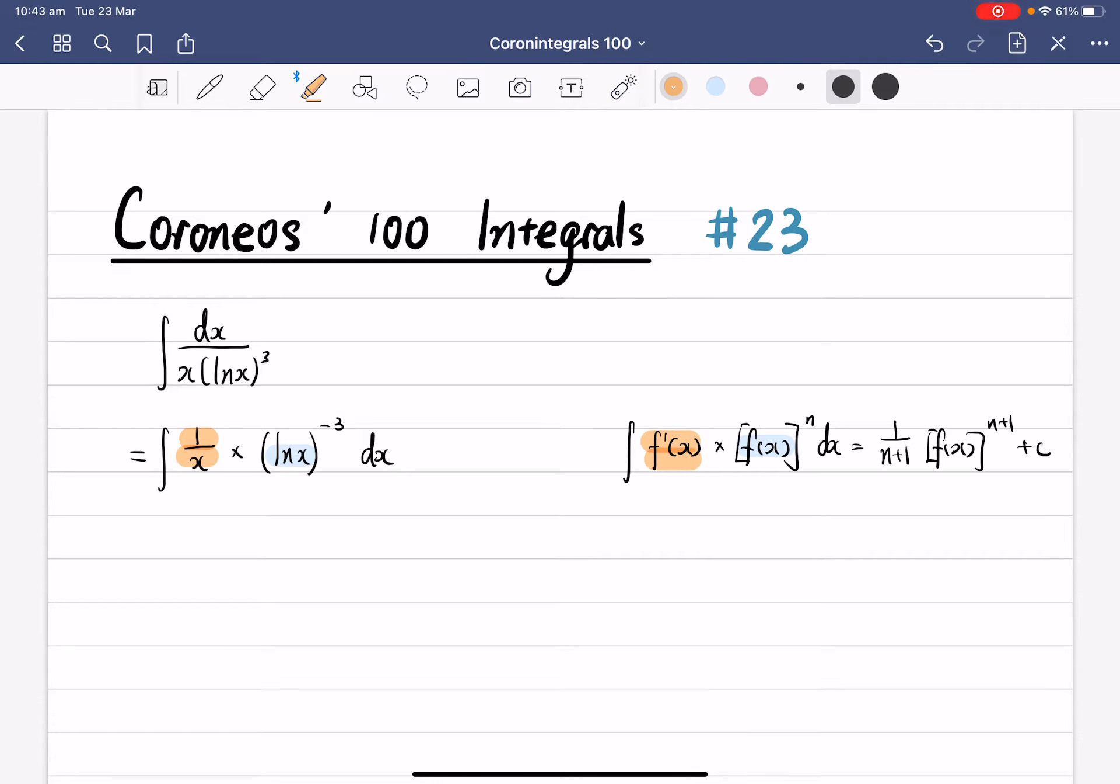So as you can see here, we've got everything we need. We've got a power of minus 3, and we've got a power that's just n. So now we can just simply apply the formula.